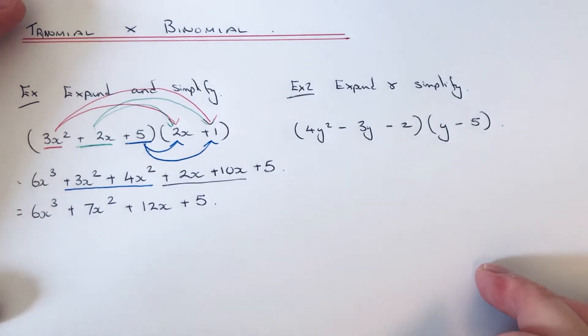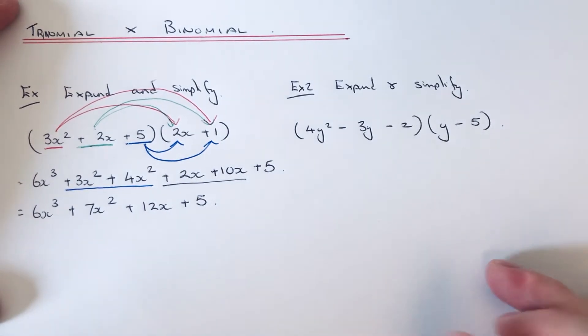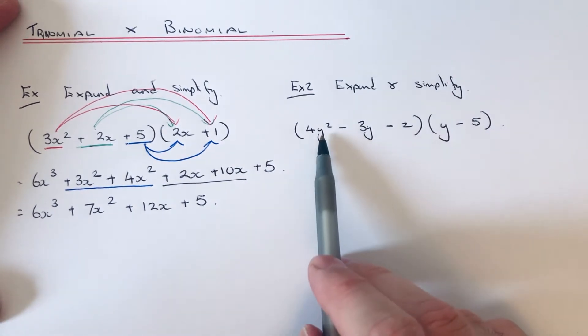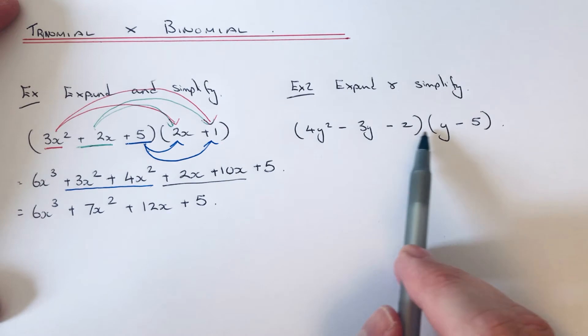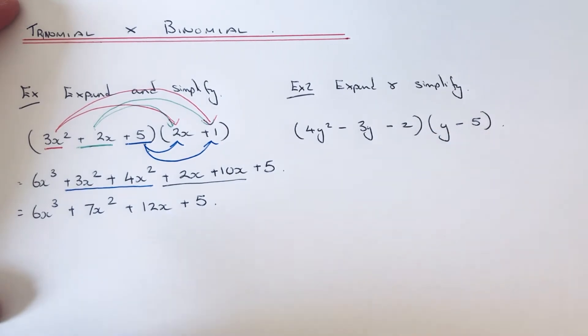So let's move on to example 2. This time we're going to multiply 4y² minus 3y minus 2 by y minus 5. Like example 1, start with your first term, the 4y², and multiply that by the y, so that will give 4y³.